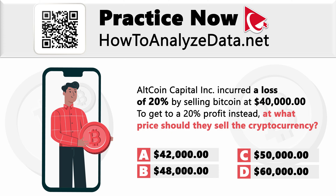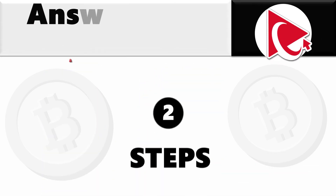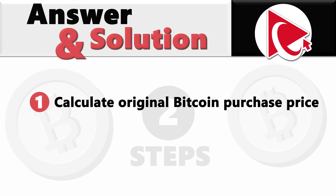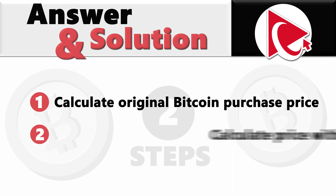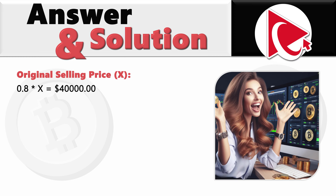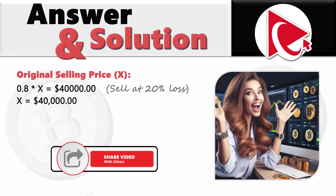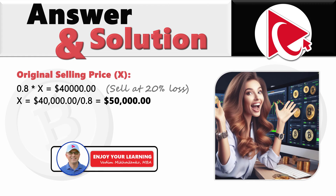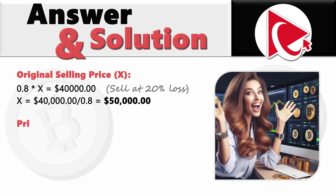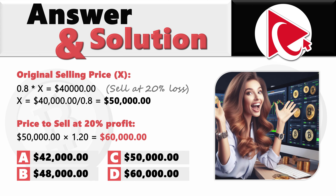Let's solve this in two steps. In step one, we calculate the original Bitcoin purchase price. We define variable x for original selling price and build the formula: 0.8 × x = $40,000, based on the 20% loss. Solving: x = $40,000 ÷ 0.8 = $50,000. That is the original cost. In step two, we calculate the 20% profit price: $50,000 × 1.2 = $60,000. So the correct answer is $60,000.